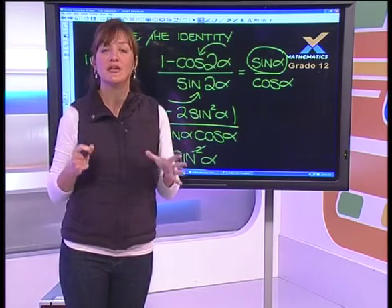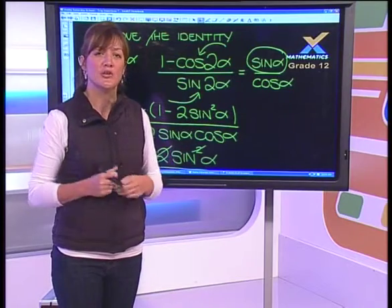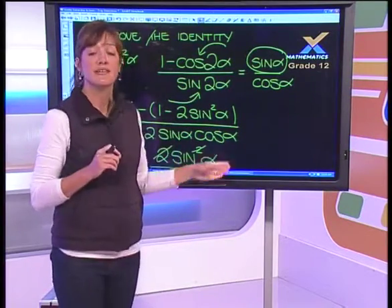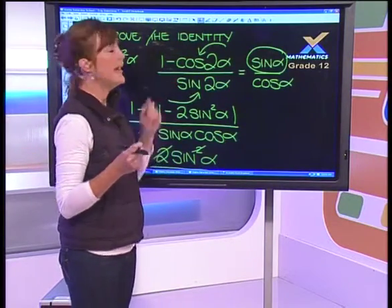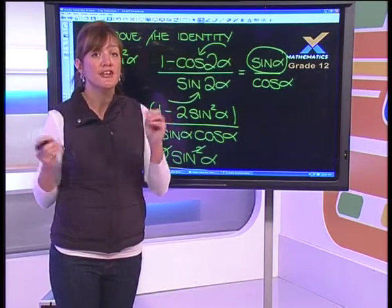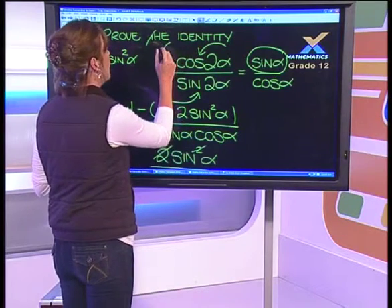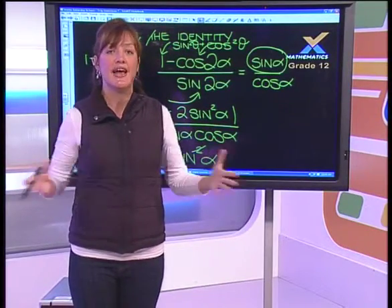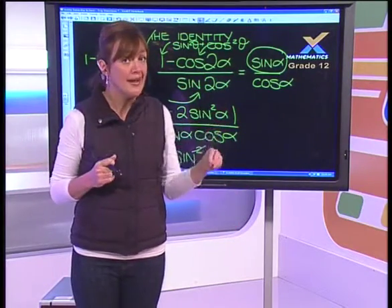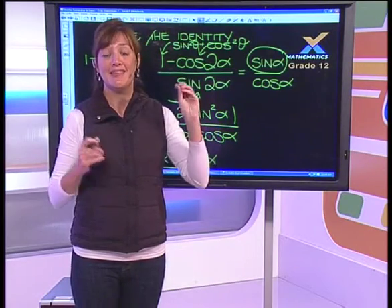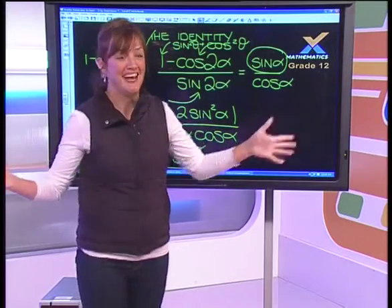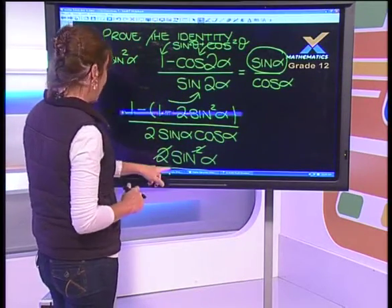Another quick tip: if you've hit a brick wall and can't get anywhere, remember that the value 1 can be very handy. Don't forget that 1 can be converted to sin²θ plus cos²θ. If you have a 1 sitting in your expression and you're stuck, try expanding it that way — it may just sort your problem out.